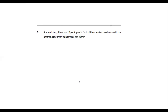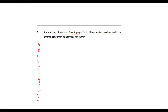Question number 6. At a workshop, there are 10 participants. Each of them shakes hands once — only once — with one another. How many handshakes are there? Let's take the 10 participants as A, B, C, D, E, F, G, H, I, and J. A will shake hands with B, then C, then D, and so on. So for A there will be 9 handshakes because there are 10 participants total.